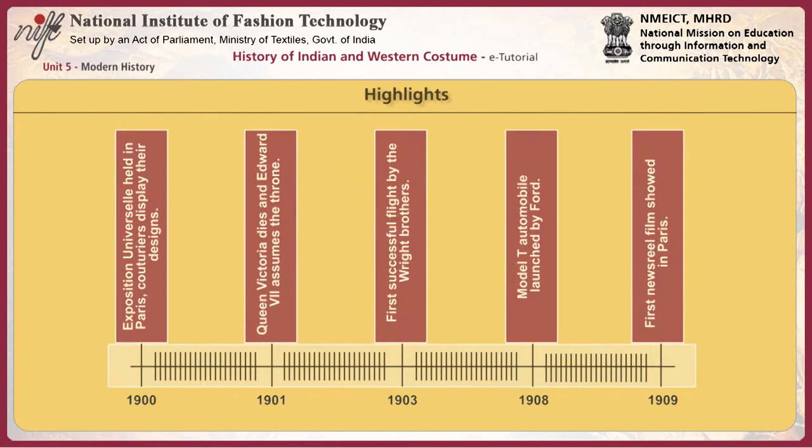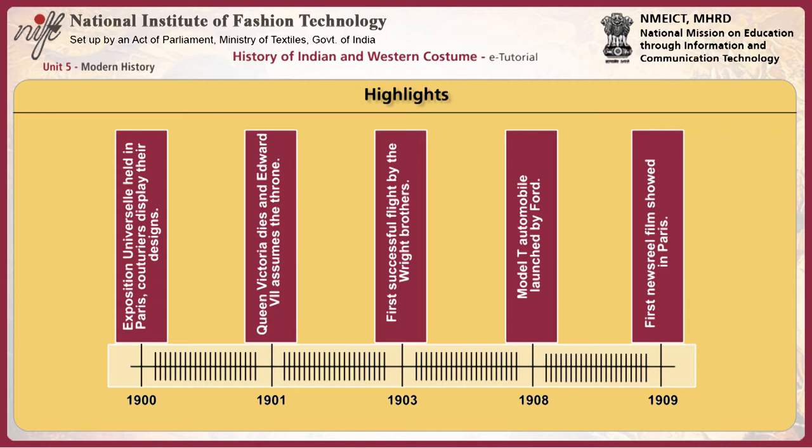We begin by briefly reviewing the highlights of the Edwardian period. In 1900, couturiers displayed their designs at an Exposition Universelle held in Paris. Queen Victoria died and Edward VII assumed the throne.